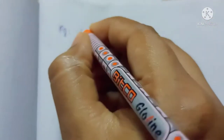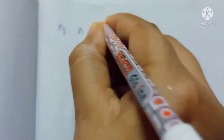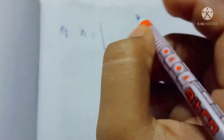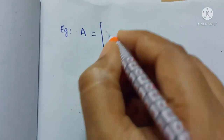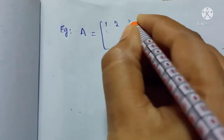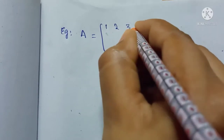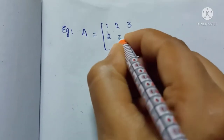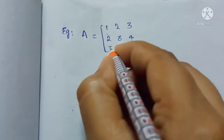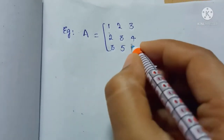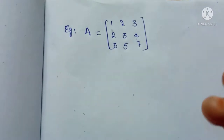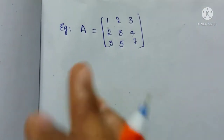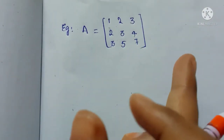The given matrix A is: 1 2 3, 2 3 4, and 3 5 7. Now, to find the rank of this 3×3 matrix, first we have to find the determinant of that matrix.